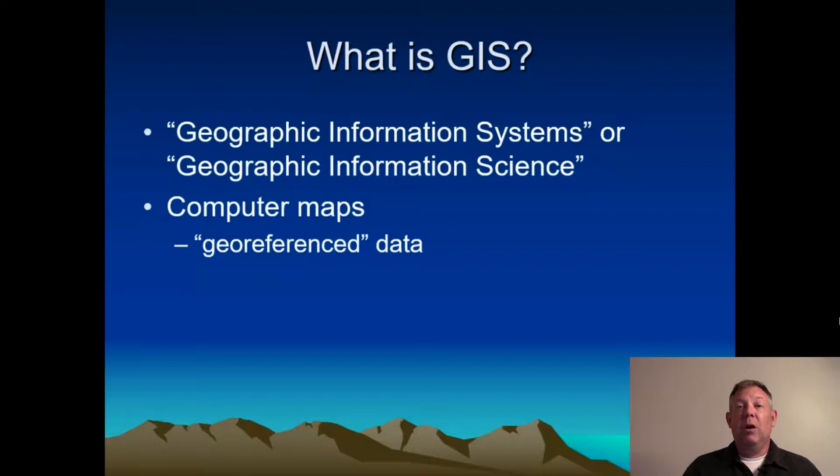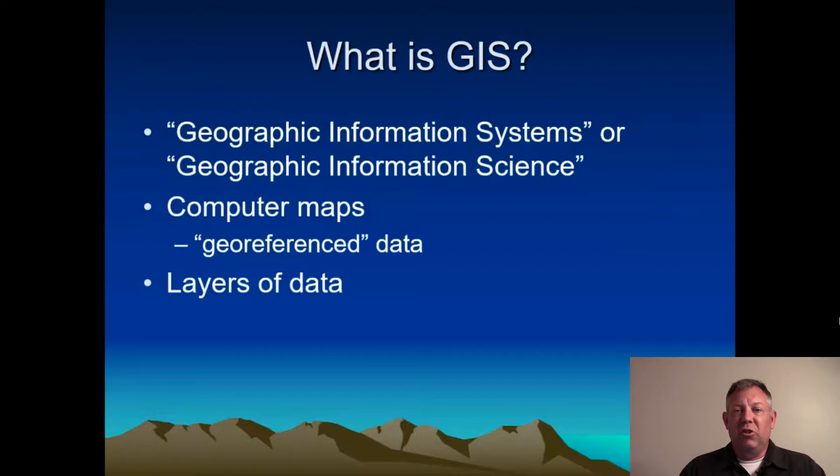The data we work with in GIS is called geo-referenced data, meaning it has a spatial reference — some sort of spatial component. Another characteristic of GIS is that we have layers of data. We can have several different types of data and lay them on top of each other on the computer to see how they all relate to one another.